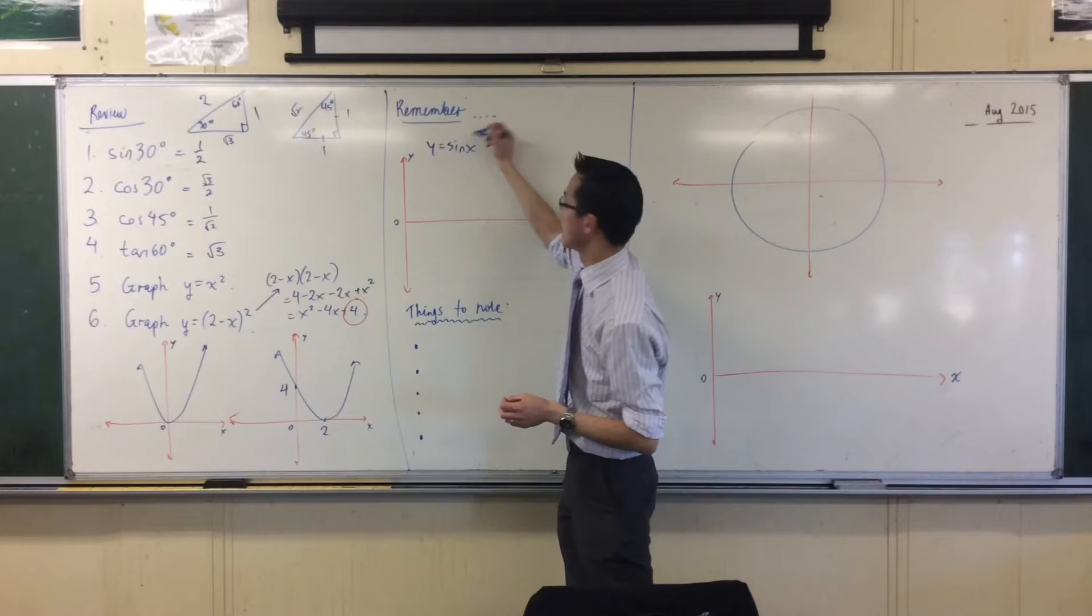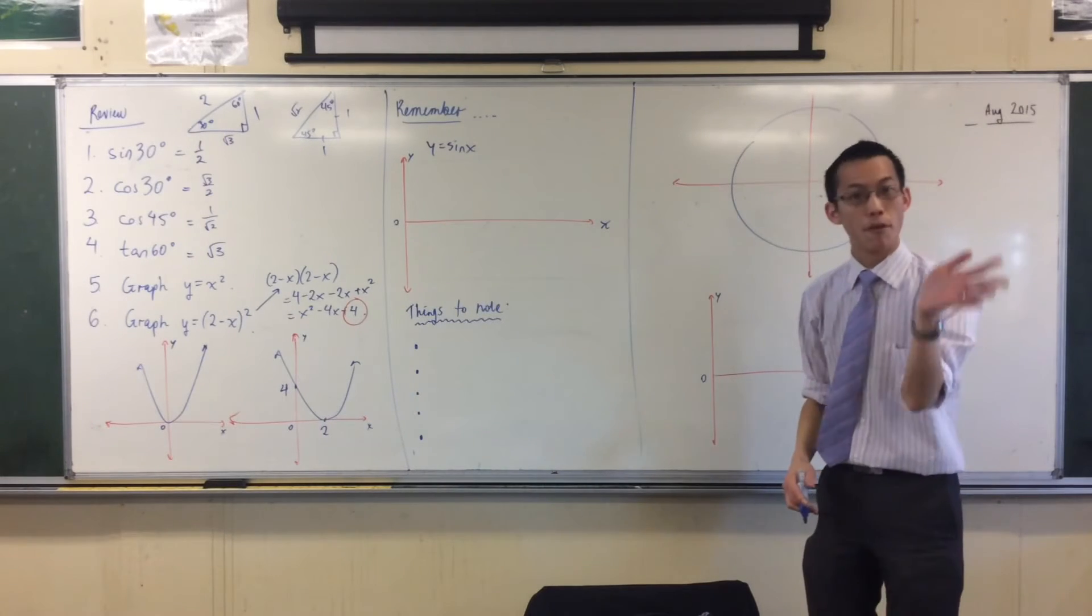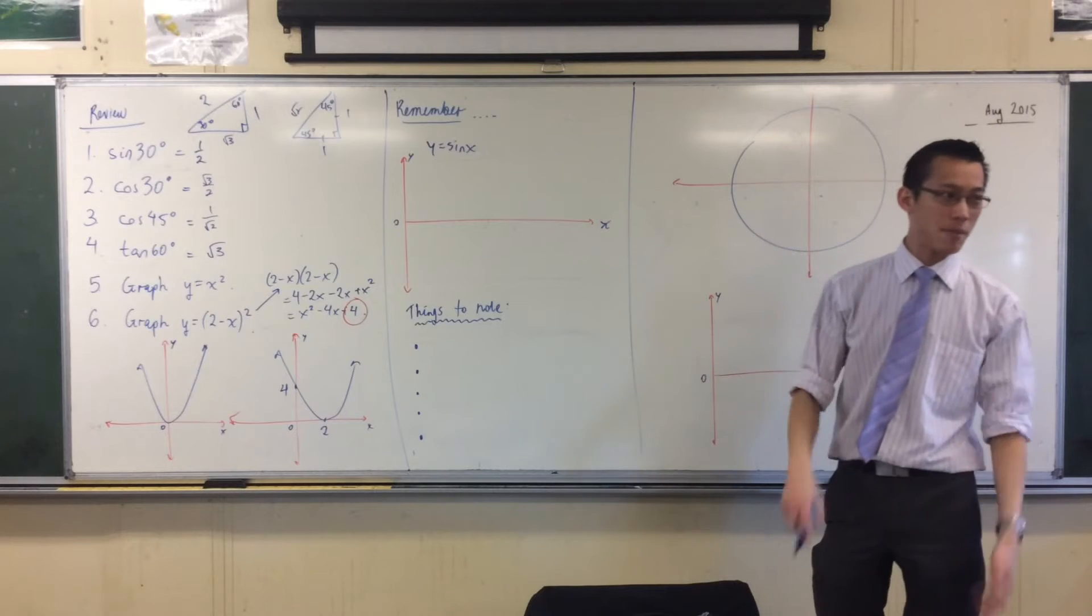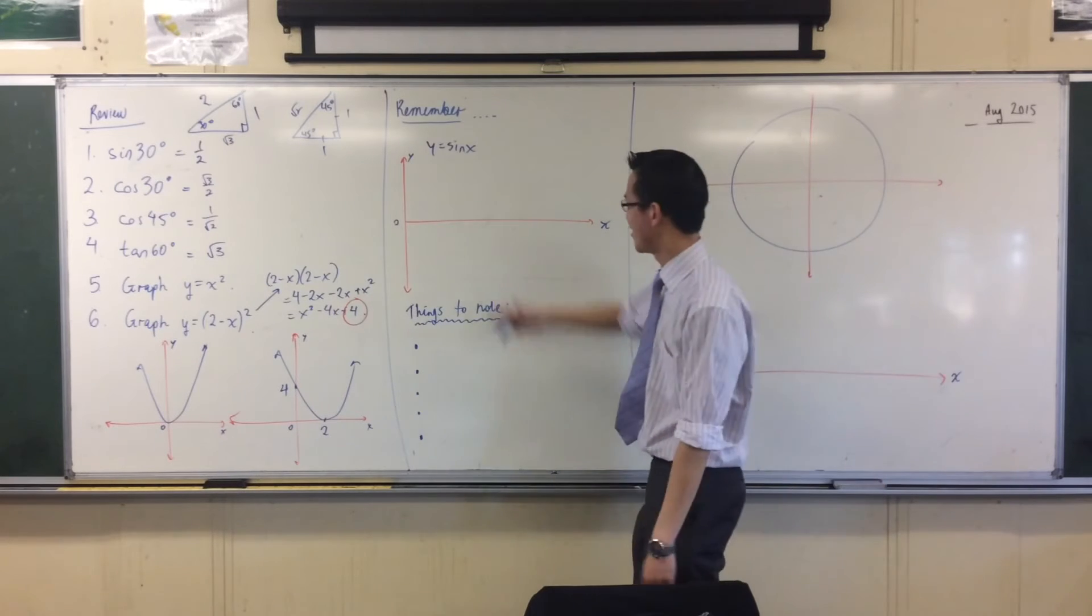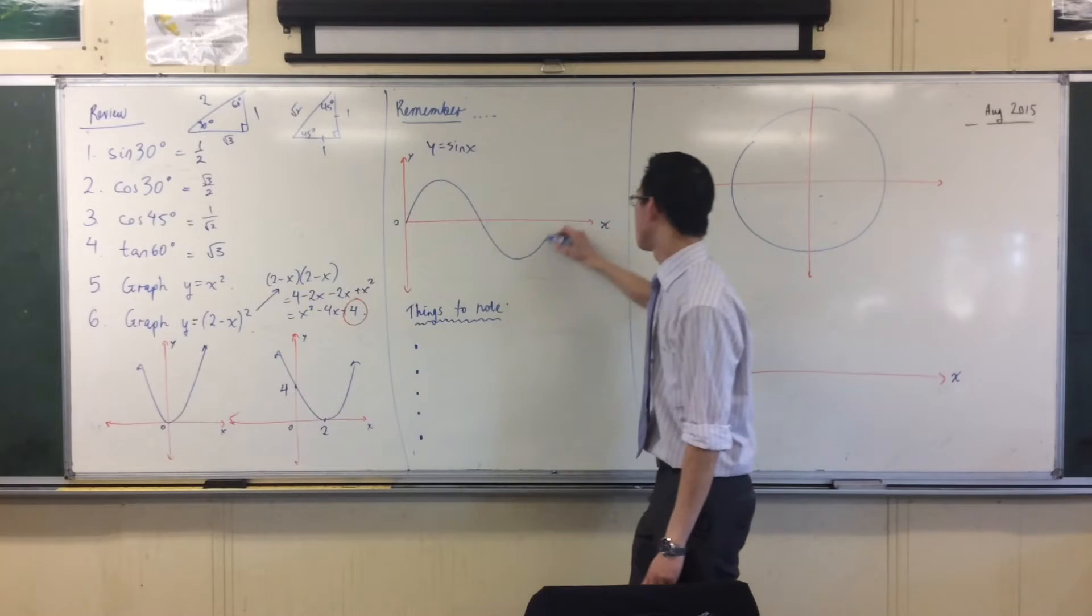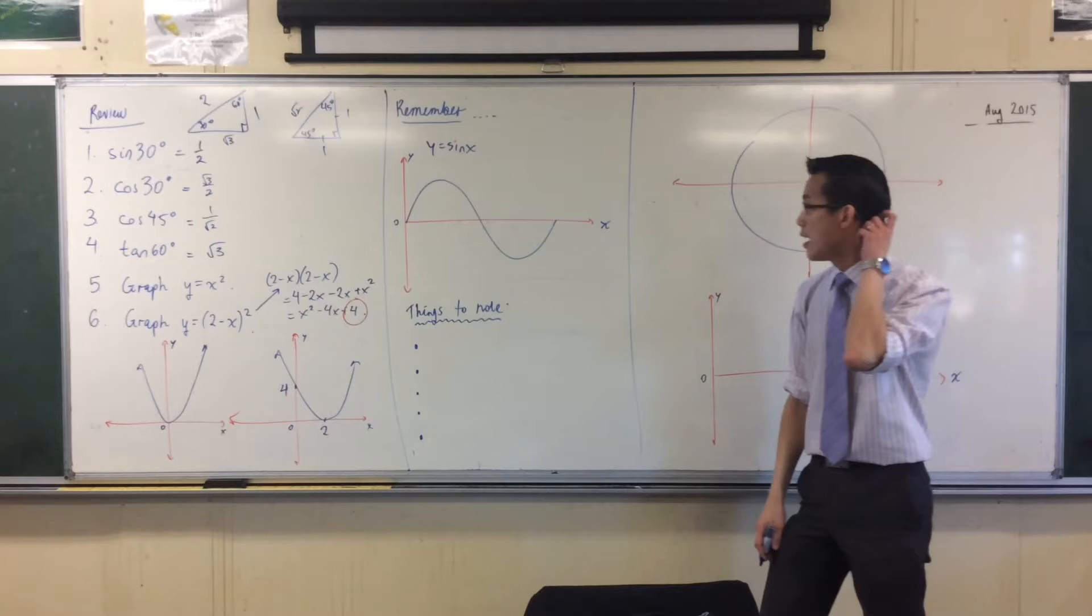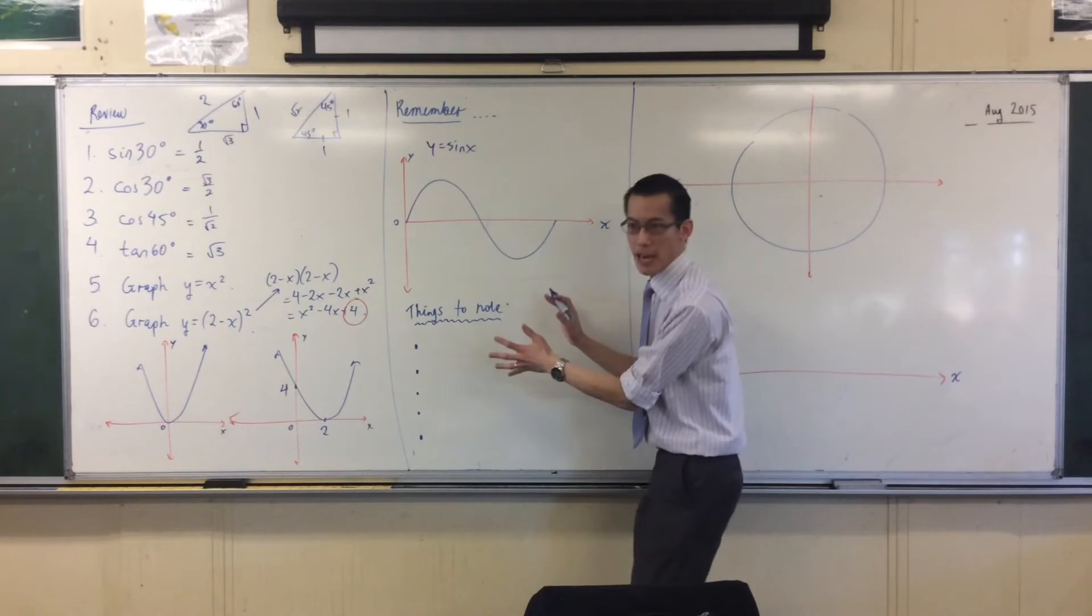It was y equals sin x. Now, I'd like you to either, if you've got it nearby, refer to that graph, or if you don't have it nearby, just draw it again. It's okay, it doesn't take long. You've got your axis here, and we went from 0 to 360. That's the part of it that we drew.